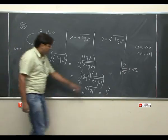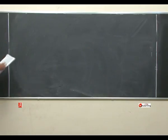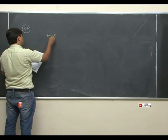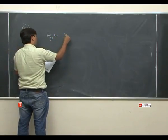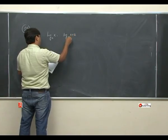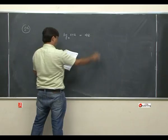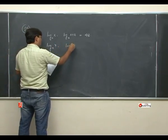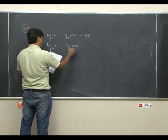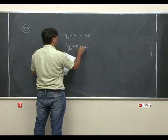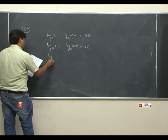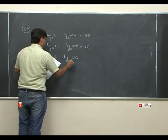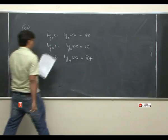देखो — A की power X लेके चले थे और B की power Y आ गया! Noted. Question number 25: तीन equations दी गई हैं। log X base A dot log XYZ base A = 48. log Y base A dot log XYZ base A = 12. log Z base A dot log XYZ base A = 84. और हमें X, Y, Z की value निकालनी है।